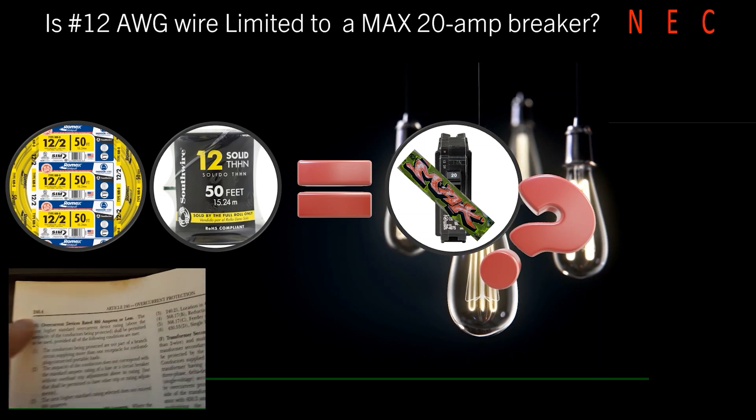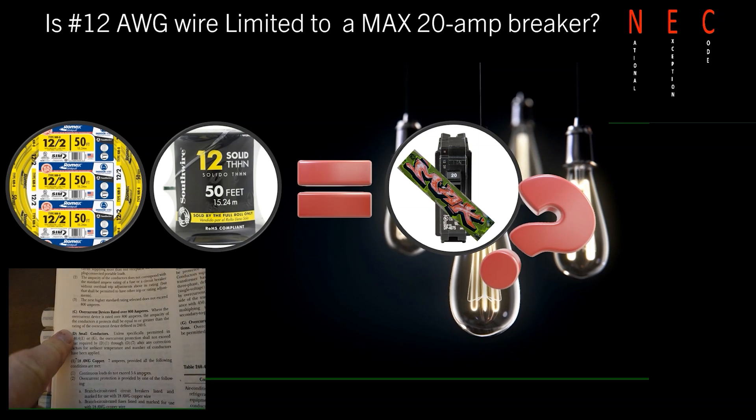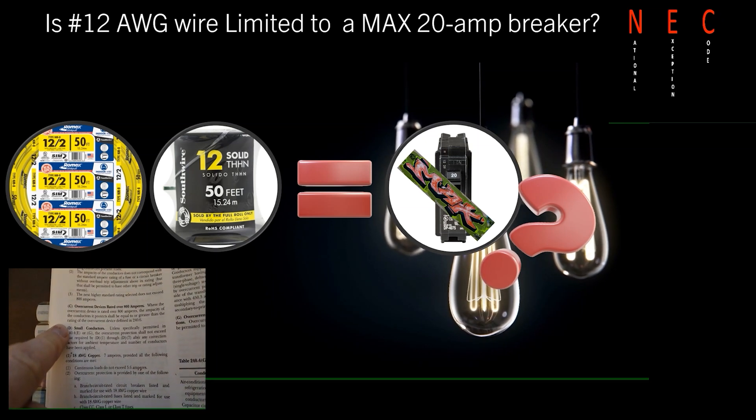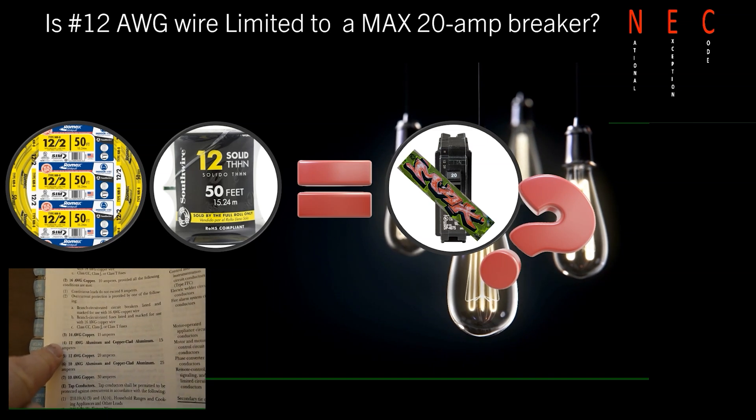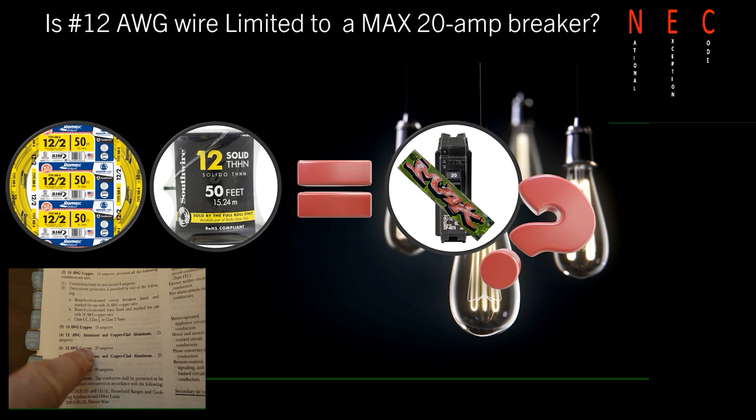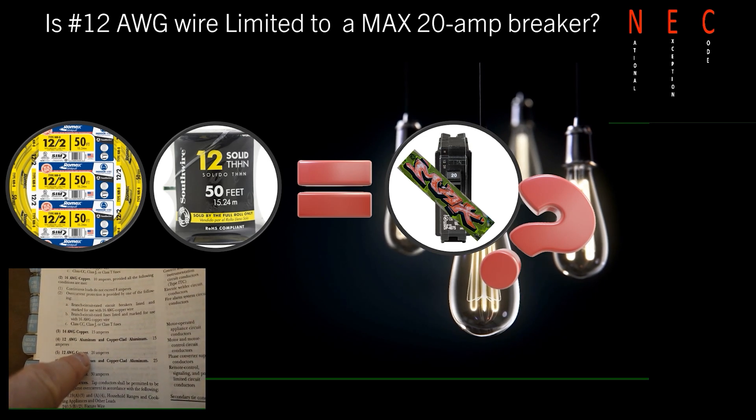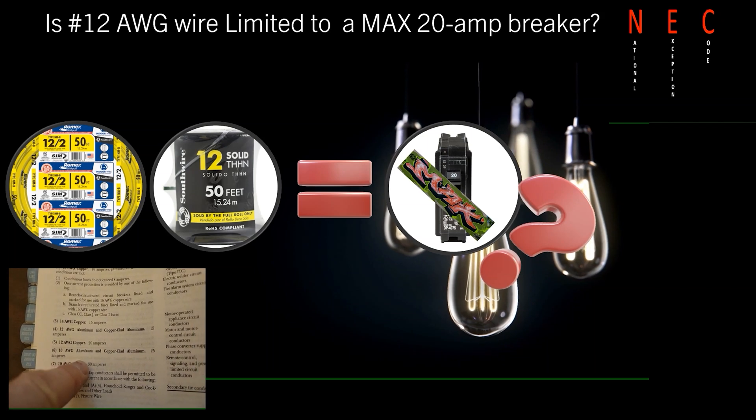But as we know, this is the National Exception Code, NEC. What this is saying is there are some exceptions that you are allowed to raise it above 20 amps on 12 gauge wire. But a blanket statement, a normal installation, yes, 12 gauge wire is limited to a maximum of a 20 amp breaker. But let's look at some of the times where it's not.